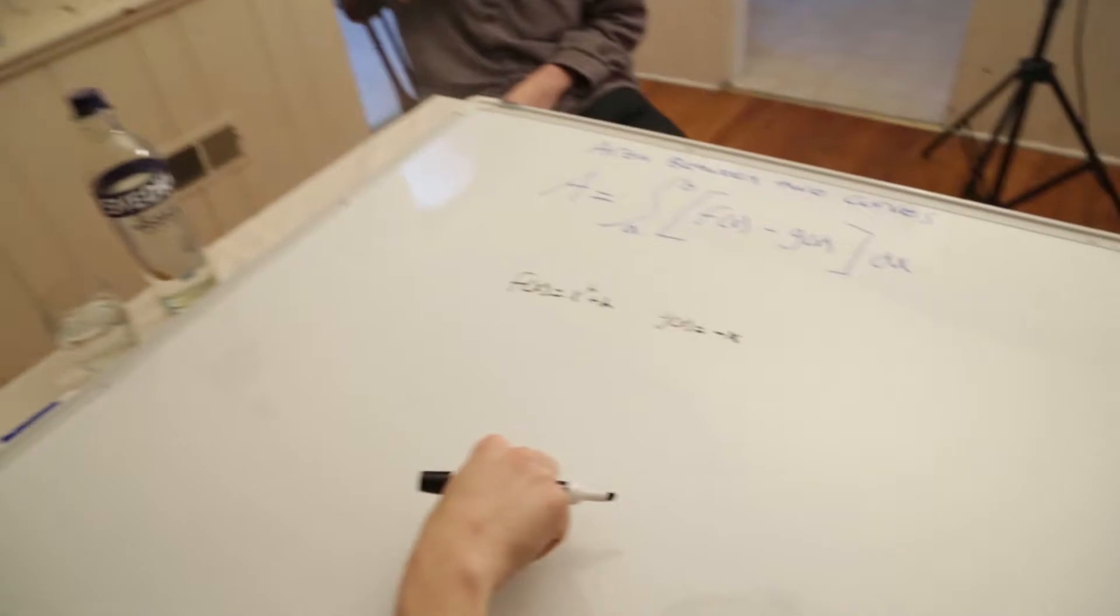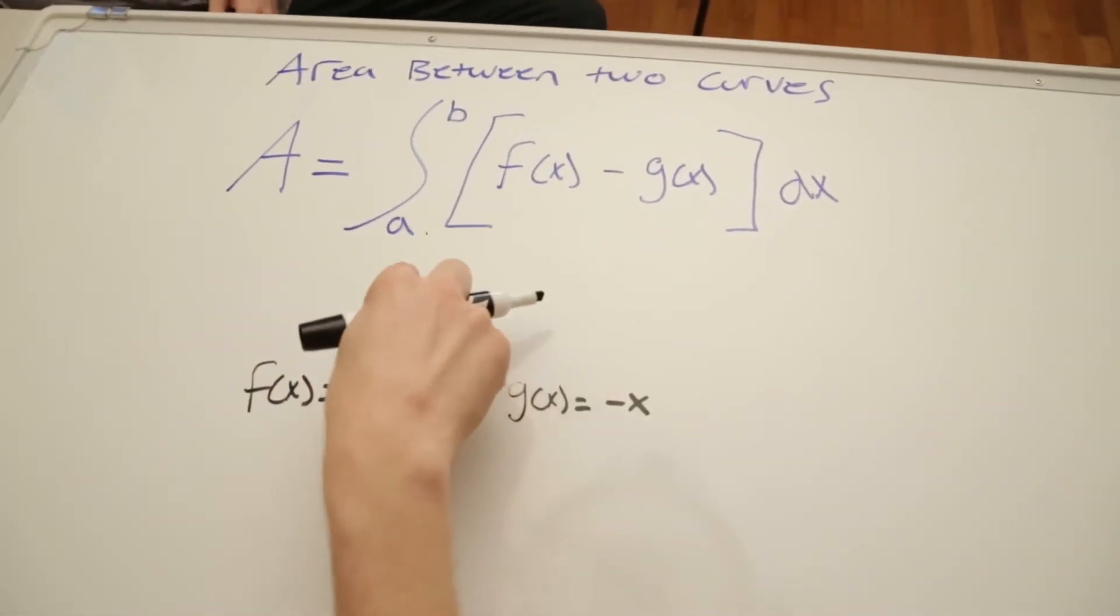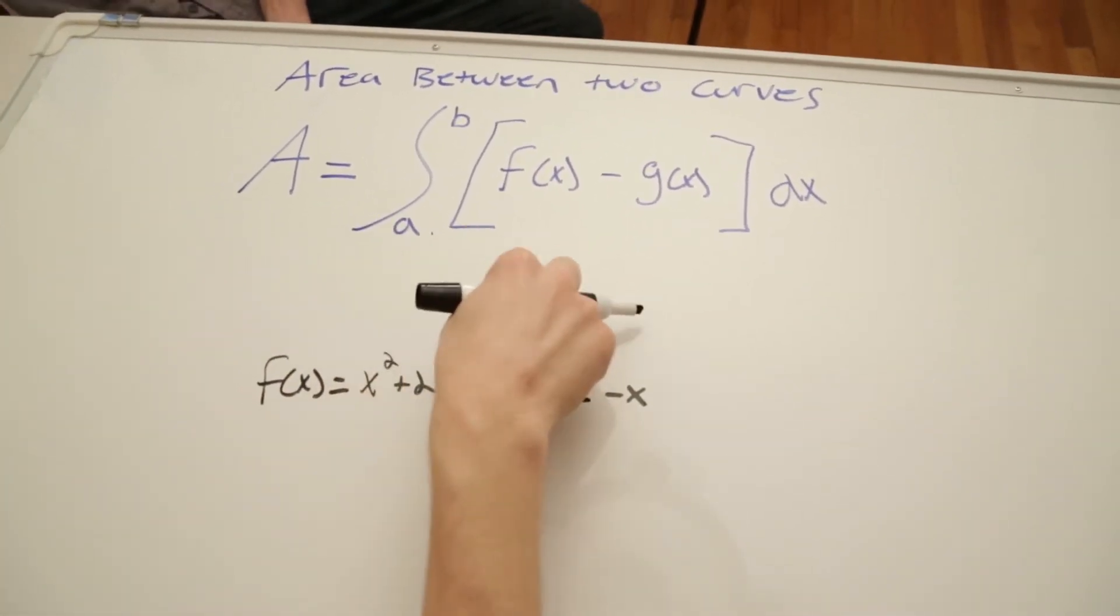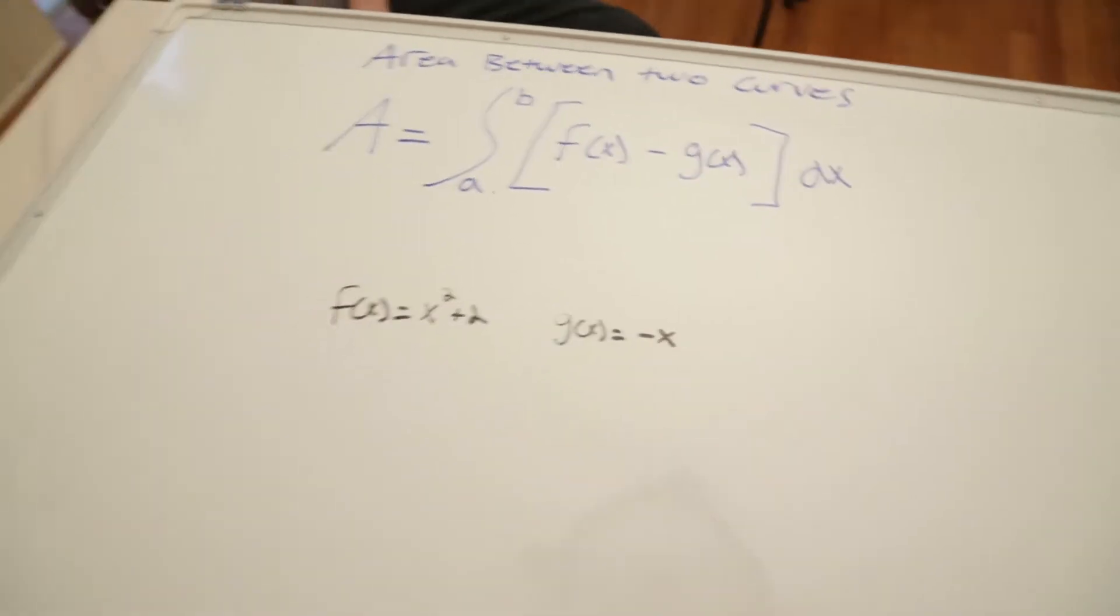Alright, so this is the formula for finding the area between two curves. The area equals the integral from a to b of f(x) minus g(x). Now, when you do these, f(x) is going to be the top curve, g(x) will be the bottom curve. So when you're given two functions, you're going to have to draw the graph out and figure out what's on top, what's on bottom.